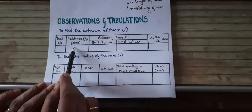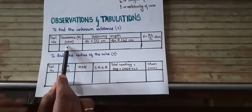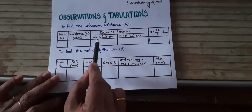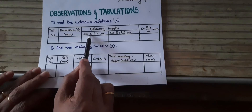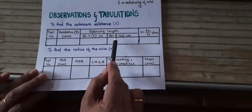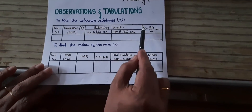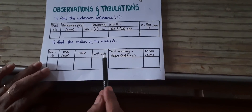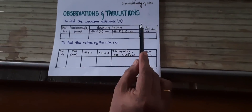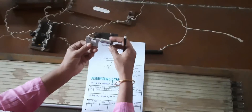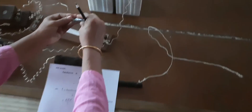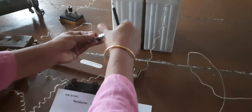Write down the standard resistance included in the circuit — in our case it was one ohm. Record the balancing length L1 for the unknown resistance X and the balancing length L2 for the standard resistance R. Then calculate the unknown resistance X.